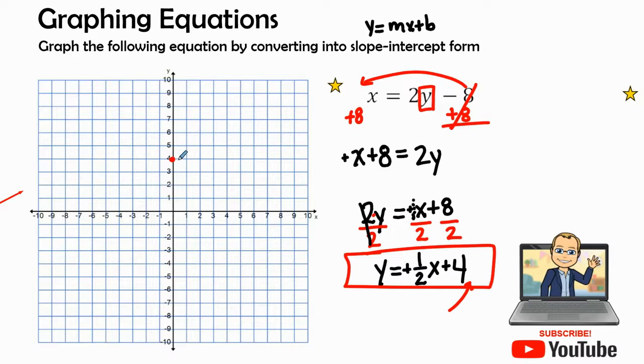And then we see that our slope right here, that rise over run, will equal 1 half. So we're going to rise 1 and over 2 and put our point. We can rise 1 again. Let's go ahead and label this. And over 2. And over 2. There's our next point.